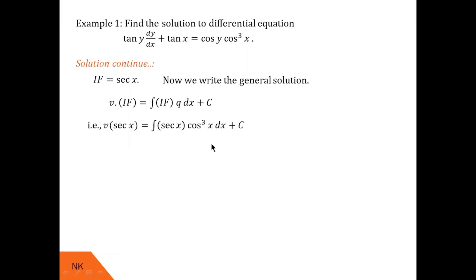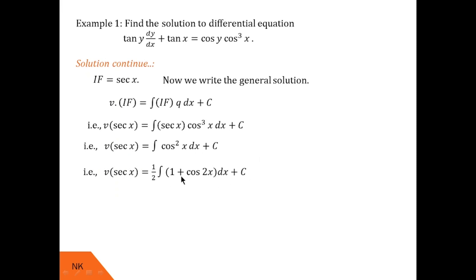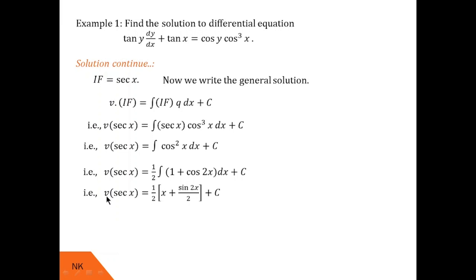Since sec x = 1/cos x, the sec x and one cos x from the numerator cancel, leaving ∫cos²x dx. Using the formula cos²x = (1/2)(1 + cos 2x), and integrating, we get: v · sec x = (1/2)(x + sin 2x / 2) + C. Finally, resubstituting v = sec y, the solution to the given differential equation is: sec y · sec x = x/2 + sin 2x/4 + C.